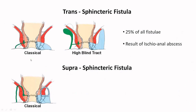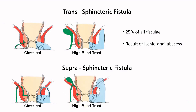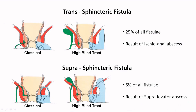Going into supra-sphincteric fistula: it will go above the external sphincter but the opening may still be at the dentate line. A high blind tract is possible and this will be a supra-levator blind tract. These are all high fistulas — they are 5% of all fistulas and usually result from a supra-levator abscess.